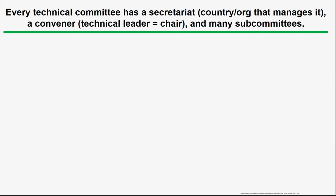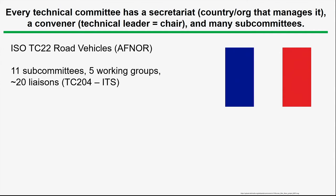The organization of a committee is as follows. Every committee has a secretariat — the country or organization that manages it. For example, it could be the United States or the Society of Automotive Engineers. The committee is led by a convener — that's the chair, the technical leader — and most committees have multiple subcommittees. As an example, Technical Committee 22 for road vehicles has the French standards organization AFNOR as its secretariat. TC22 has 11 subcommittees and five working groups, with liaisons to other committees because vehicle technology is also the concern of TC204, so the ergonomics people and vehicle developers need to coordinate.